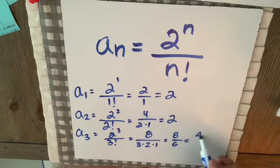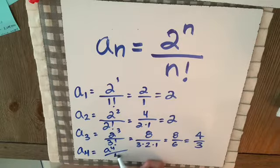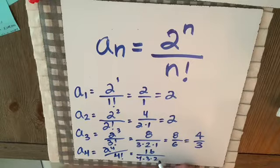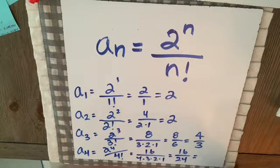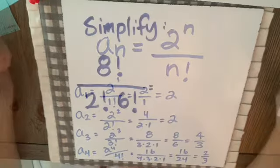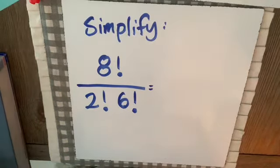8 over 6 simplifies to 4 over 3. And a₄ is 2 to the fourth over 4 factorial. 2 to the fourth is 16, over 4 times 3 times 2 times 1, which is 16 over 24. That simplifies to 2 over 3.